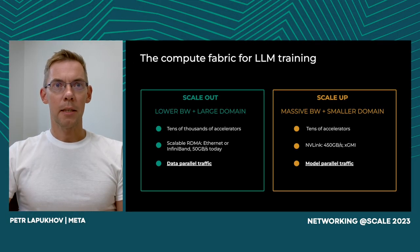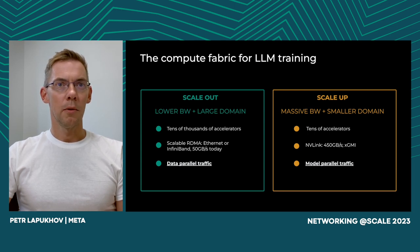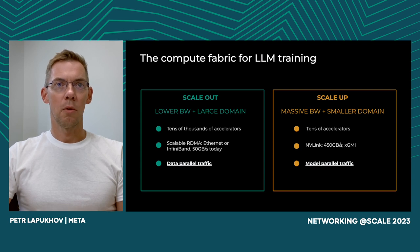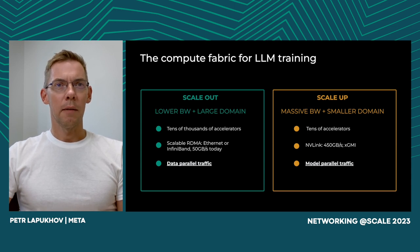The scale-out domain connects the compute pods together — you can think of racks of servers as small pods. Scale-out is where we use technologies like InfiniBand or RoCE to implement connectivity for tens of thousands of nodes; scalability is most important here, with connectivity at 50 GB per second. The scale-up domain is usually contained in one server — NVLink or XGMI are examples. In contrast with scale-out, scale-up has short distance but very high bandwidth. In contemporary systems, the delta between scale-out and scale-up bandwidth is about 9x — from 50 GB/s to 450 GB/s.